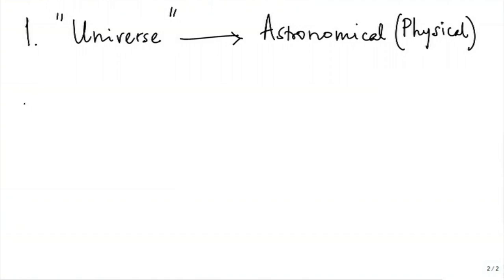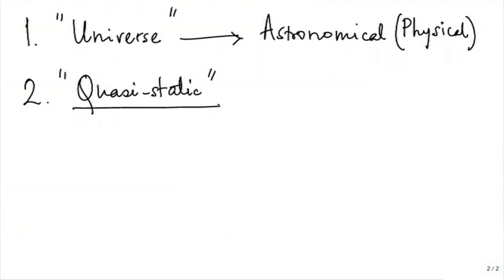The second confusion seems to be on the word quasi-static. The word static here comes from its links with mechanics — something which is not moving, something which is at one place is static; something which is changing is dynamic. So, static here means something equivalent to our state of equilibrium, a point in thermodynamic state space representing a state of equilibrium.